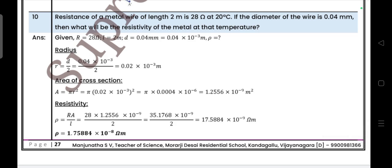The resistance of a metal wire of length 2 meters is 28 ohm at 20 degrees Celsius. If the diameter of the wire is 0.04 mm, then what will be the resistivity of the metal at that temperature?